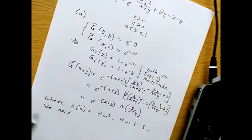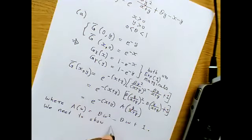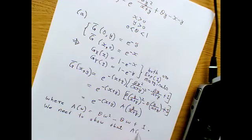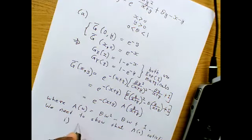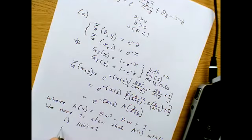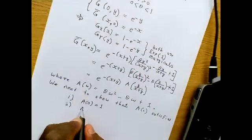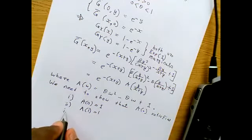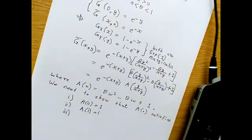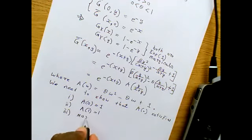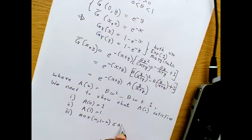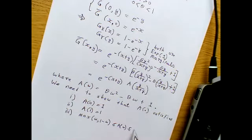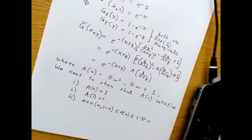To answer part a, we need to show that A satisfies the four conditions. Condition one: A(0) must equal 1. Condition two: A(1) must equal 1. Condition three: max(omega, 1-omega) ≤ A(omega) ≤ 1 for all omega. I'll split condition three into sub-conditions: alpha — A(omega) ≥ omega; beta — A(omega) ≥ 1-omega; and gamma — A(omega) ≤ 1.